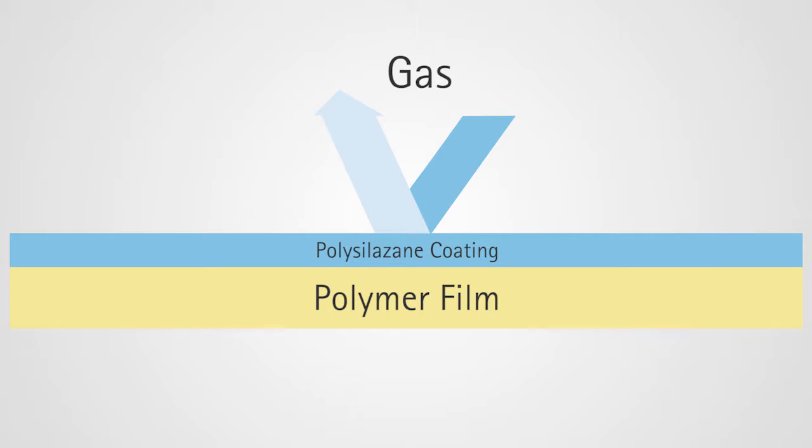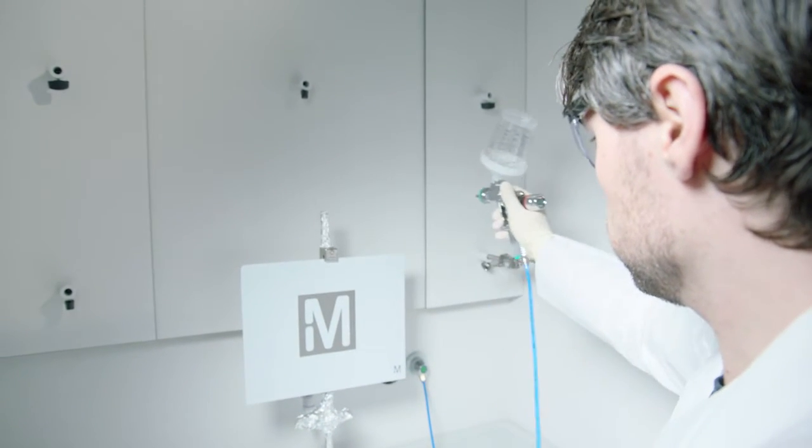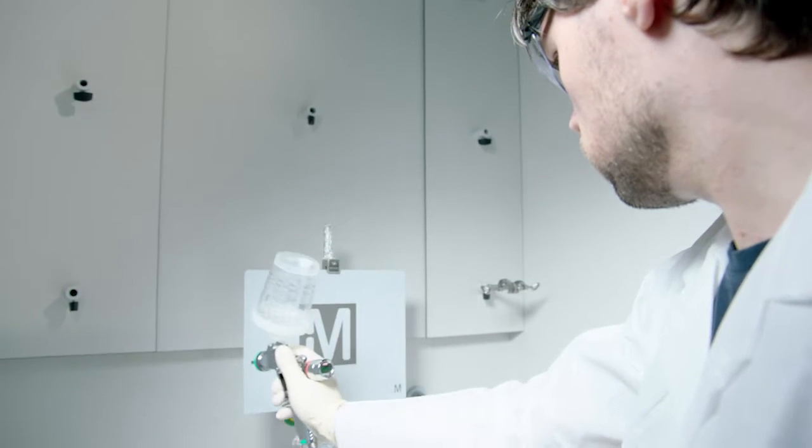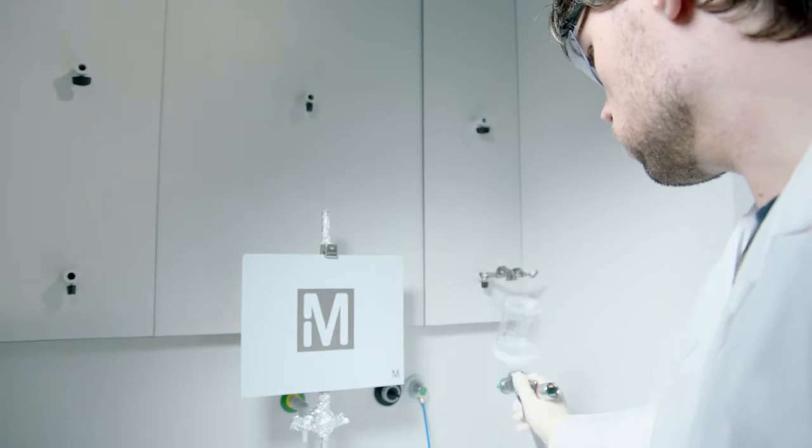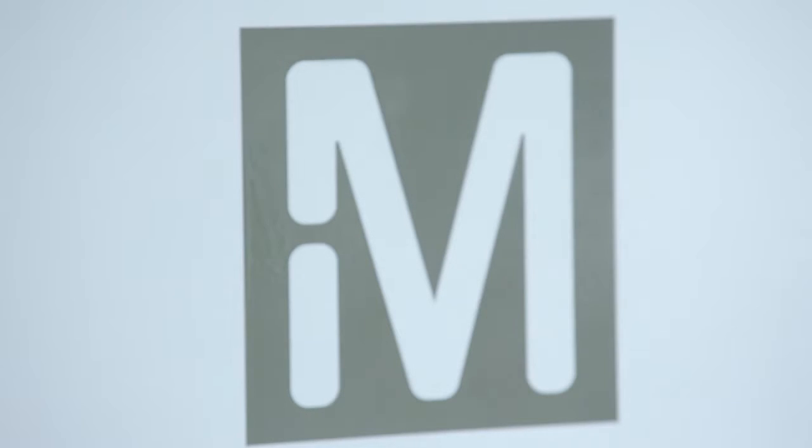Polysilazanes arrive as a transparent liquid which can be applied easily via spray coating. The surface should be smooth, dry, and clean and it should be completely covered. After the coating is applied, the drying process is very fast and easy. Dry to the touch after one hour, full hardness is achieved after seven days at room temperature.